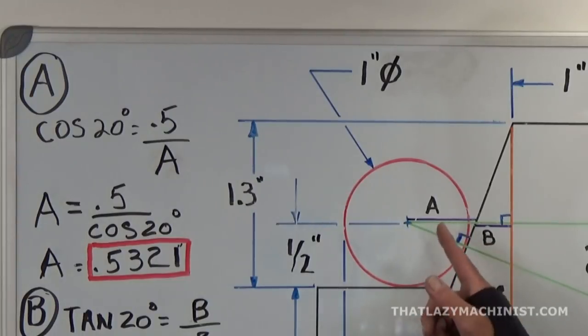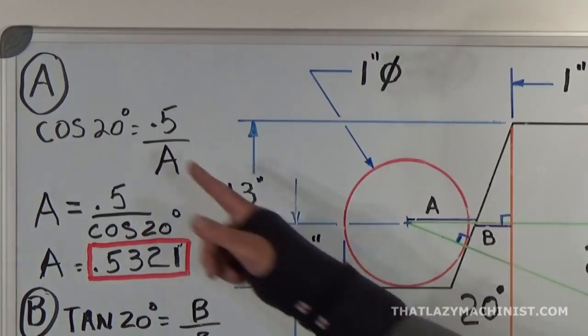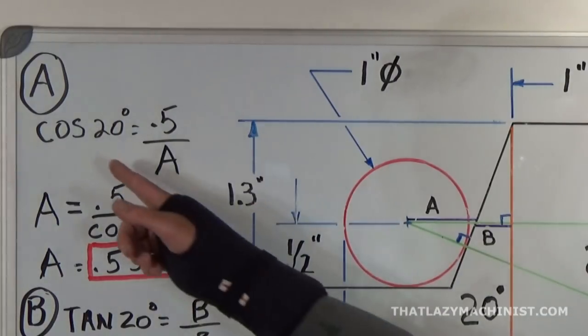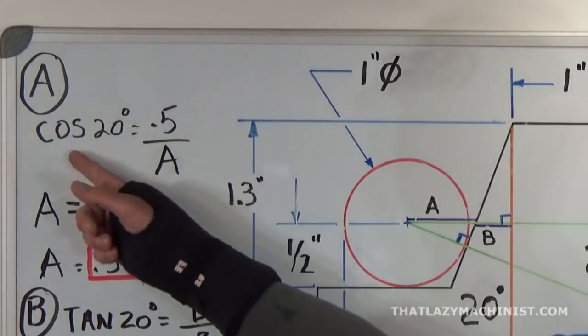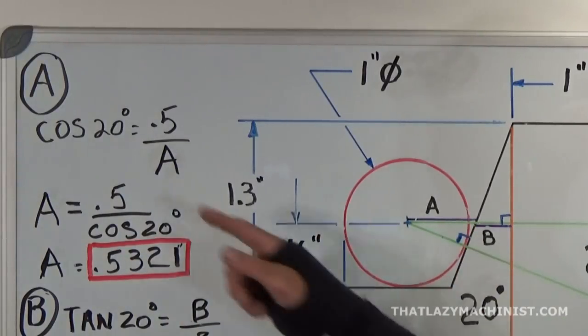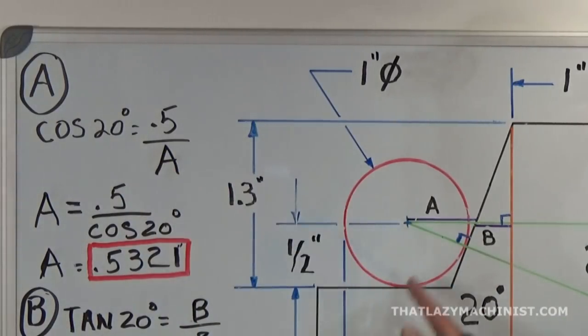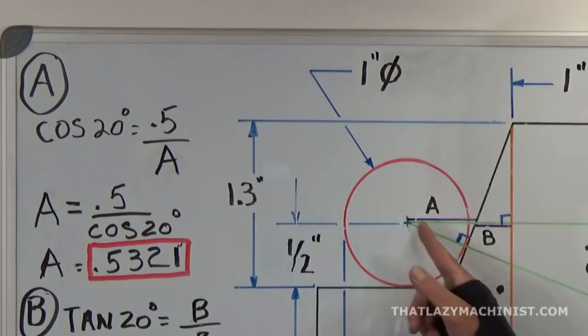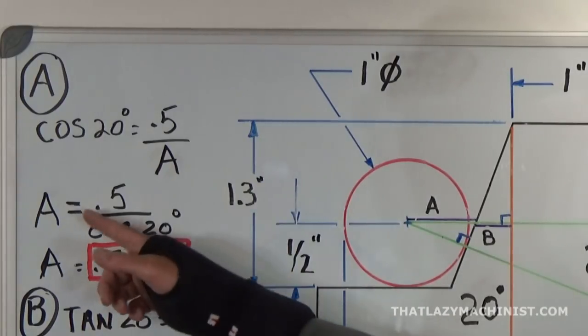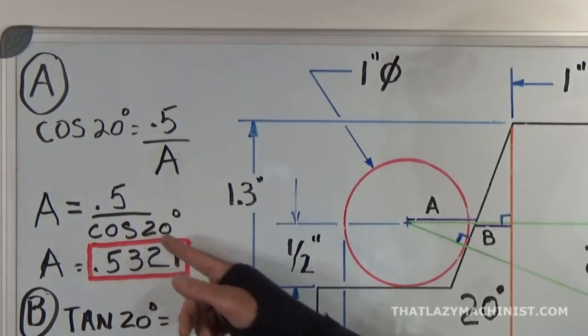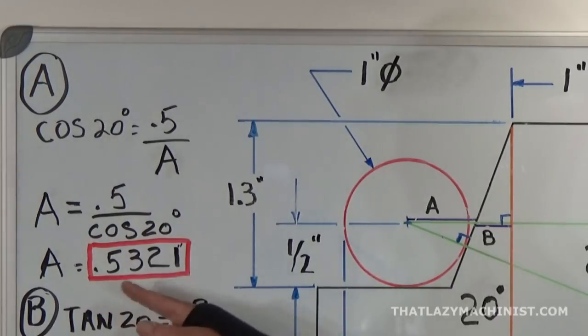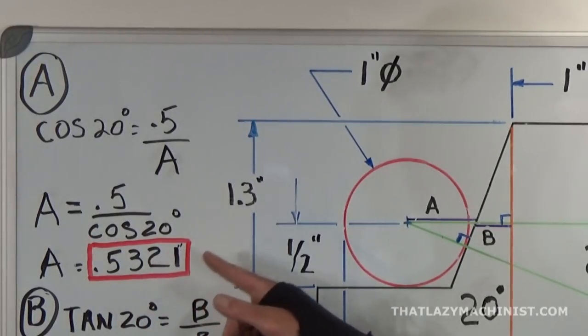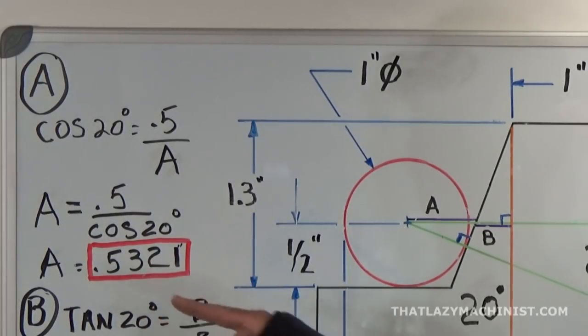A is the hypotenuse of this small triangle. We can see here that by using cosine, we can say that cosine of 20 degrees, which is our angle, equals 0.5, which is the length of our adjacent side here, divided by hypotenuse A, which is our unknown. So A equals 0.5 divided by cos 20. A equals 0.5321, 532 thou.